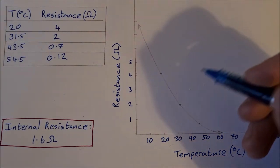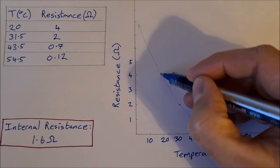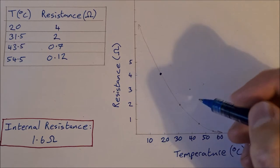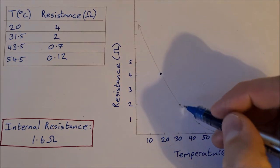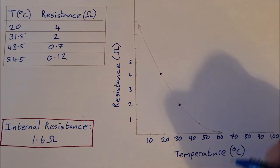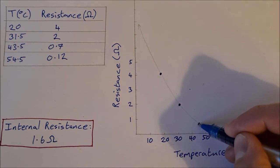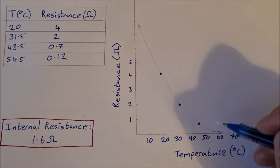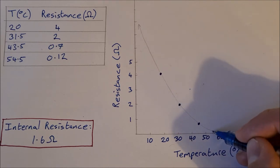So plotting these points there, we have 20 degrees and 4 ohms. We have 2 ohms at 31.5 degrees. At 43.5 degrees, we had 0.7 ohms. And at 54.5 degrees, we had 0.12 ohms.